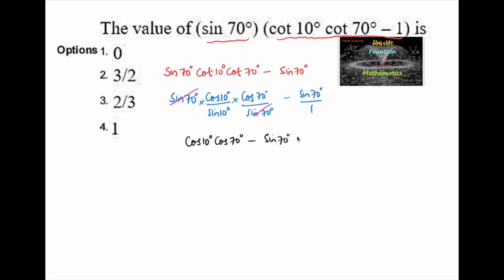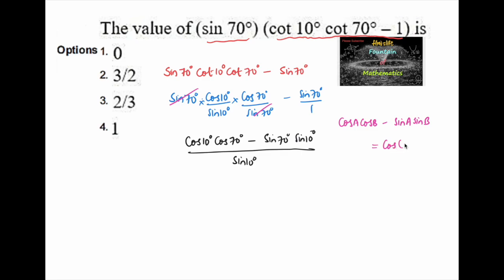The numerator is in the form cos A cos B minus sin A sin B, which equals cos(A + B). So here we can write cos of 10 degrees plus 70 degrees, divided by sine 10 degrees, which equals cos 80 degrees divided by sine 10 degrees.